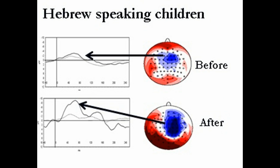Results from the Reading Acceleration Program in Hebrew-speaking children showed greater activation in a brain region that reflects awareness of reading errors.